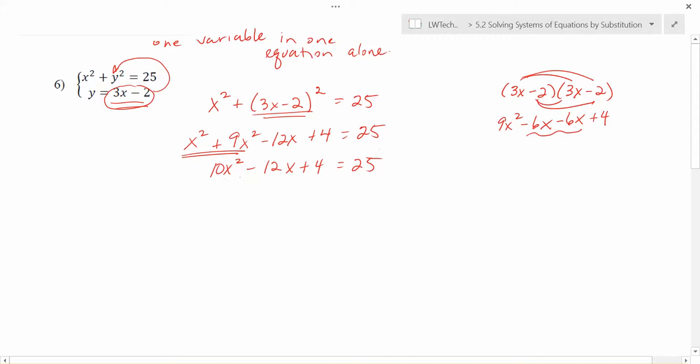Now, at this point, notice we have an x squared and an x term. We will never be able to combine those because they're not like terms. So instead, we'll need to get one side equal to 0, and then either factor or use the quadratic formula. So let's start by subtracting 25 from each side. That's going to get us 10x squared minus 12x minus 21 equals 0.